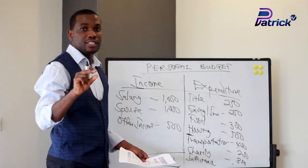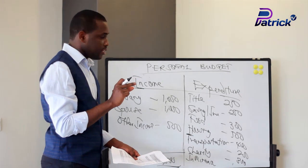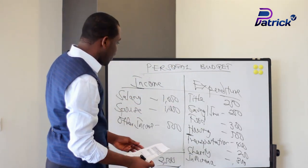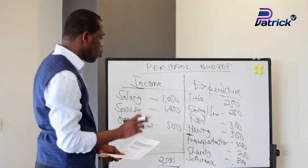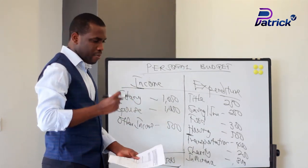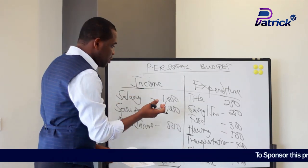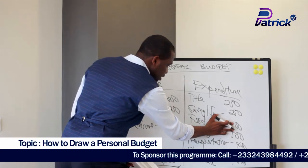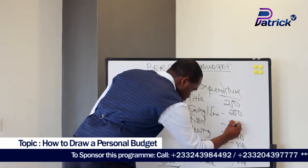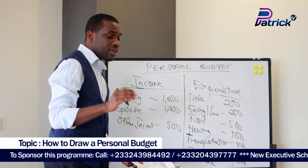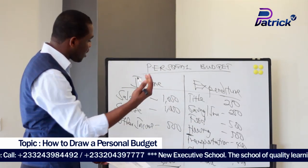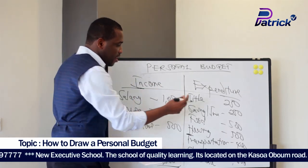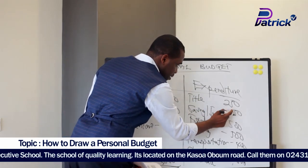Now you ask yourself if there are any other items you haven't covered. Then review the items you've selected — which of these is too small for yourself or your family? Suppose you realize the 300 cedis for food is too small; you change it to 500 cedis, which means you are left with just 100 cedis. You can roll that 100 cedis leftover into your savings and investment, making it 350 cedis.